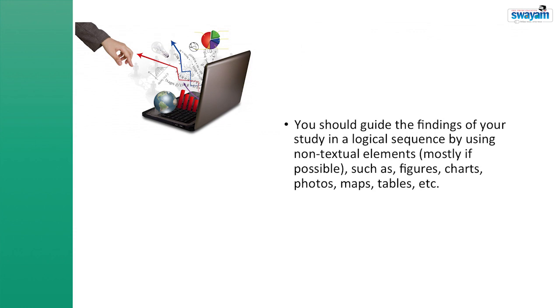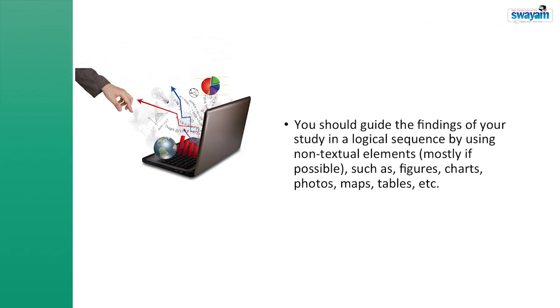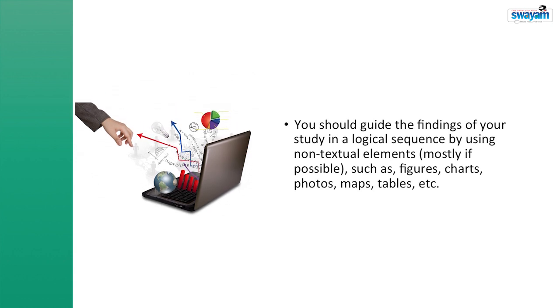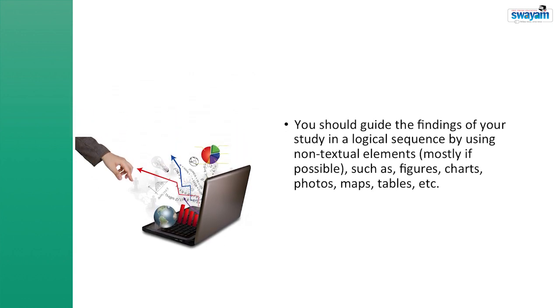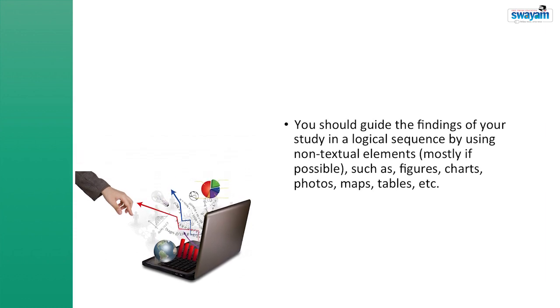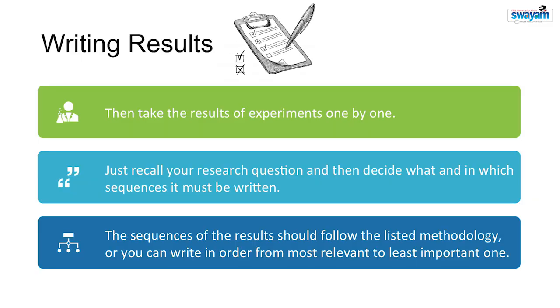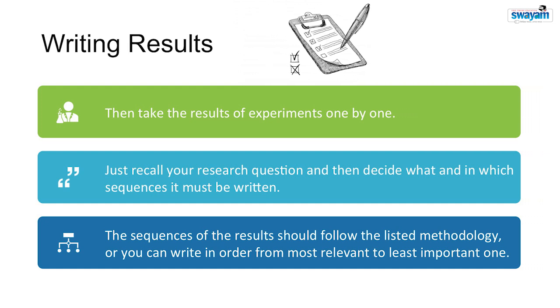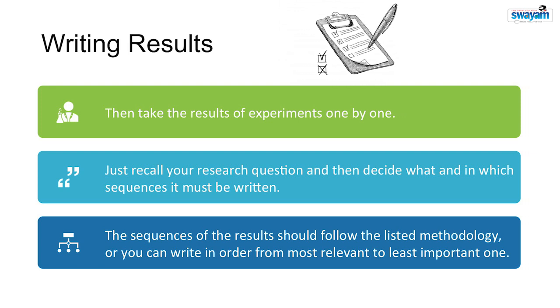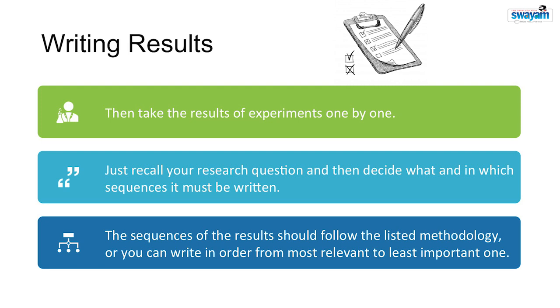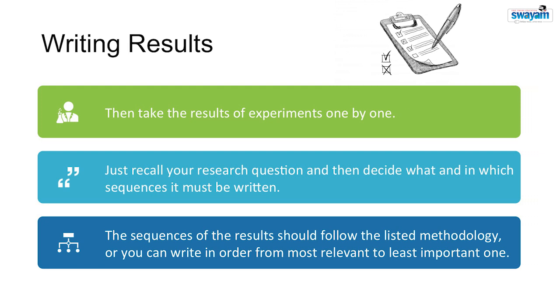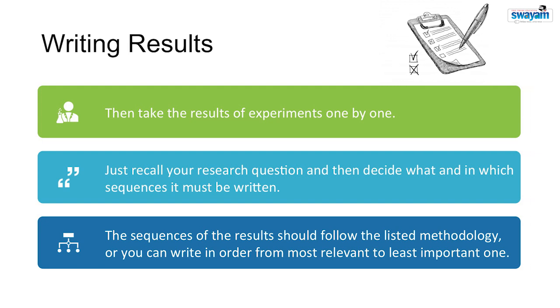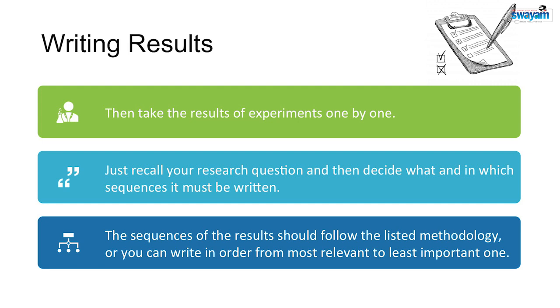You should guide the finding of your study in a logical sequence by using non-textual elements mostly if possible such as figures, charts, photos, maps, tables etc. You can start this section stating in brief that what you have done in the study, then take the result of the experiment one by one. The sequence of putting the results should be as per methodology. And if you are little confused about certain results, just recall your research question and then decide what and in which sequence it must be written. The sequences of the results should follow the listed methodology or you can write in order from most relevant to least important one.